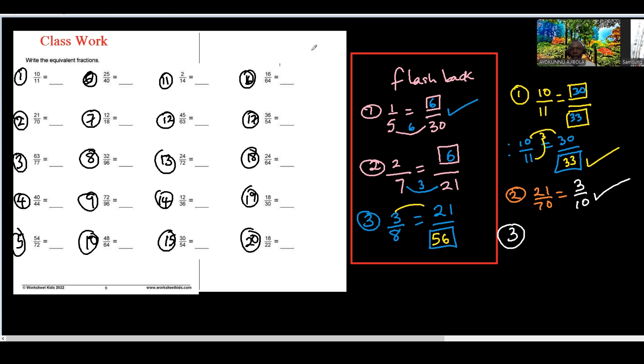Let's look at number 3. Number 3 is in the 7 times table. Question number 3 is in the 7 times table, right? Yes. Good, good. That's a very good observation. So 7 into 63, how many? 9. And 7 into 77, how many? 11. So it means the fraction that is equal to 63 over 77 will be 9 over 11.